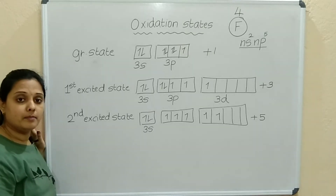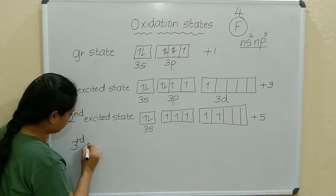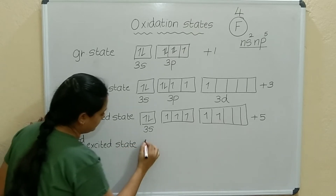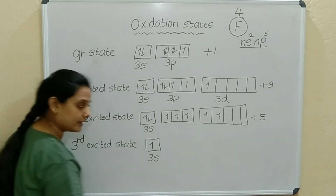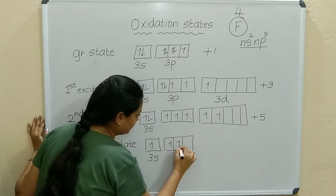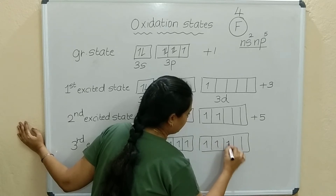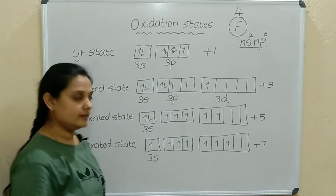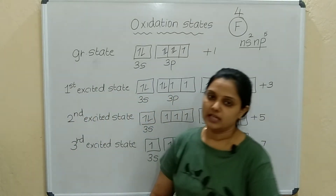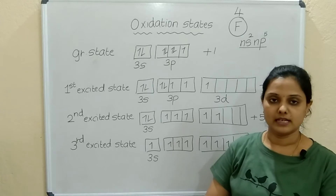The S orbital also has paired electrons which can be unpaired. In the third excited state, one electron from 3S jumps to the D orbital, giving 7 unpaired electrons in total. So Chlorine, Bromine, and Iodine can show plus 1, plus 3, plus 5, and plus 7 oxidation states.